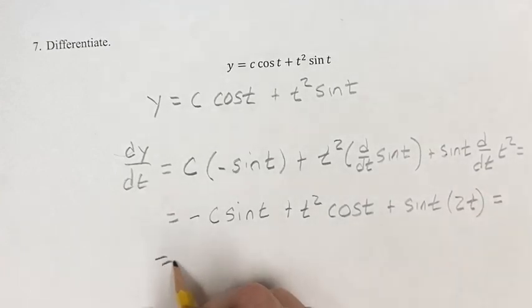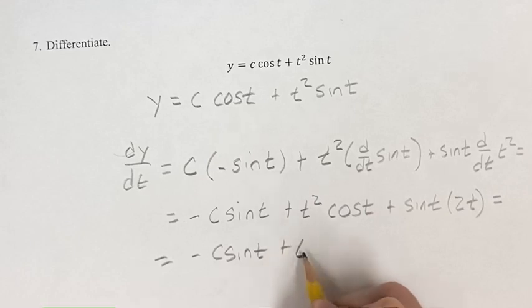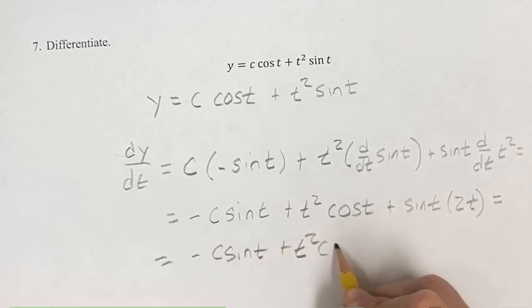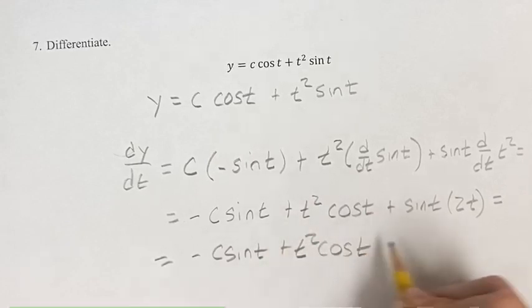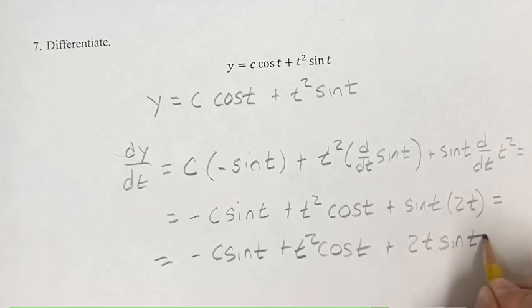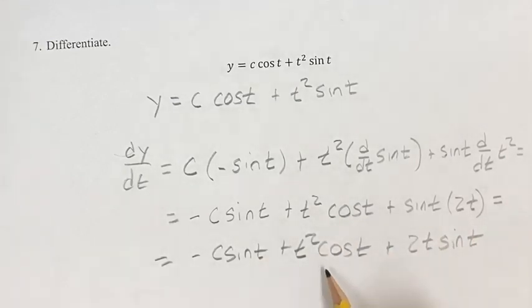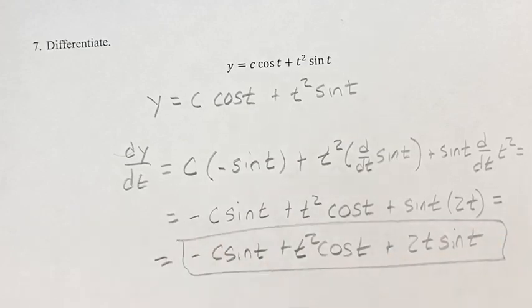So one last step, just rewriting the first two terms and moving that 2t out to the front of this term. So you have negative c sine t plus t squared cosine t plus 2t sine t as your derivative.